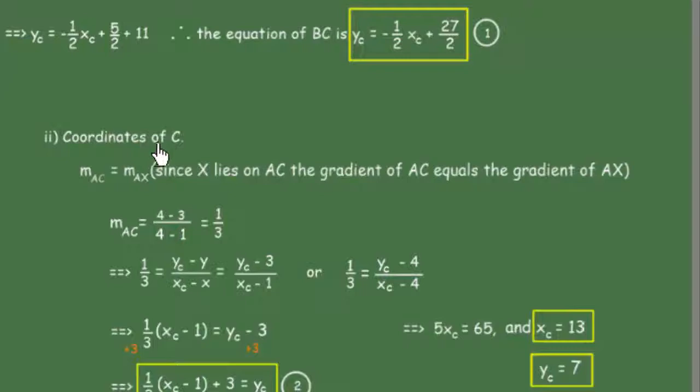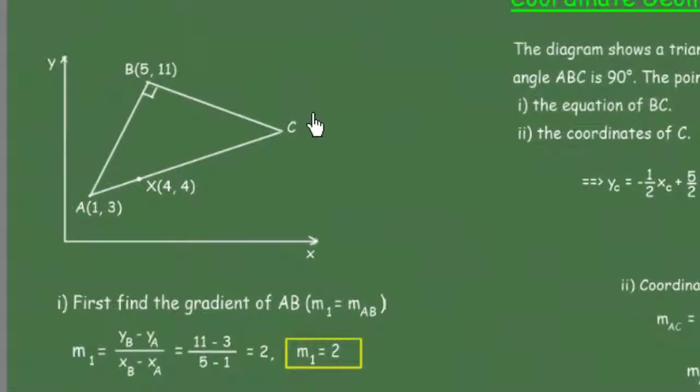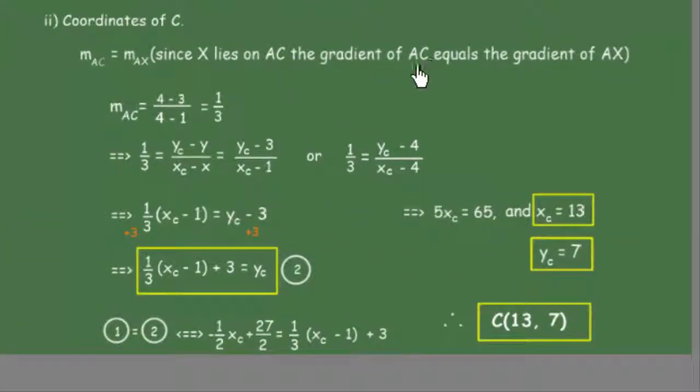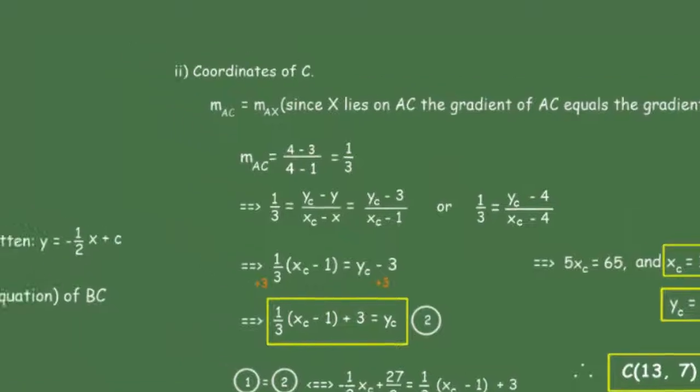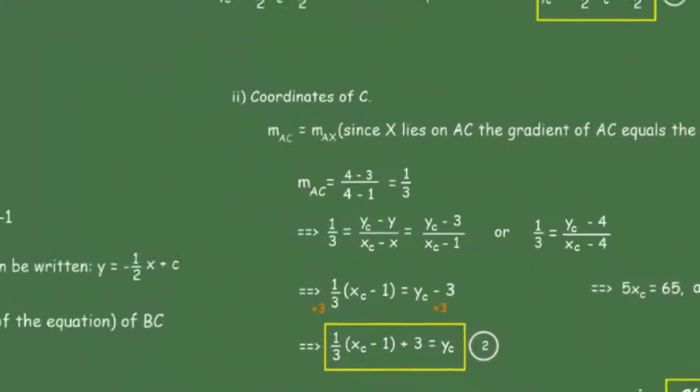Now we're going to find the coordinates of C. The gradient of AC equals the gradient of AX since X lies on AC. The gradient of AC equals AX equals (4 - 3)/(4 - 1) = 1/3. This is the gradient of this line.